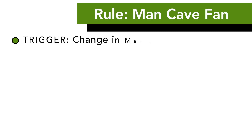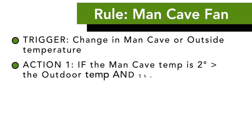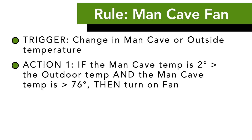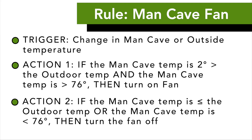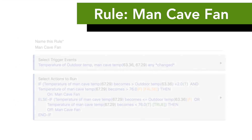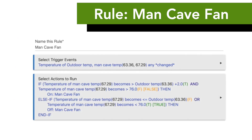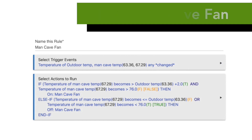To demonstrate this, we're going to build a rule to turn on the fan of my man cave if the temperature in my man cave is more than two degrees greater than the outside temperature and the man cave temperature is greater than 76 degrees. However, if the temperature in my man cave is equal to or less than the outside temperature, or the man cave temperature drops below 76 degrees, turn that fan off. Our finished product will look like this. Along the way we're going to learn all about ifs and ands and elses, so buckle up — we're going on a Rule Machine adventure.